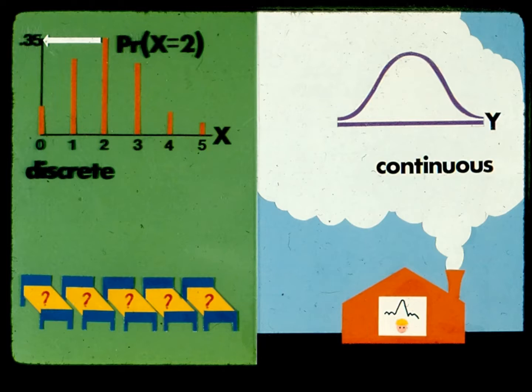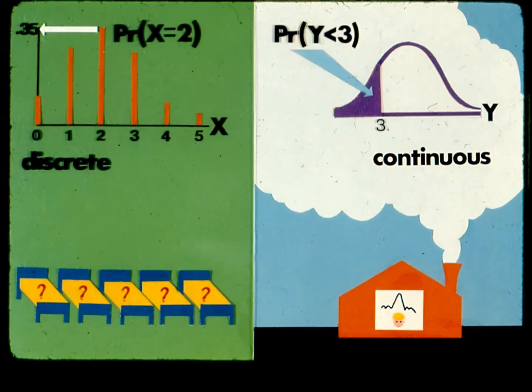In graphs of discrete distributions like the one on the left, the probabilities are represented by the heights of lines. For instance, the probability that 2 out of 5 patients experience wound disruption is 0.35 in this particular hospital. For continuous distributions like the one on the right, the probabilities are represented by areas under the curve, the area under the entire curve being 1. For example, the probability that FEV is below 3 is the shaded area under the curve to the left of 3.